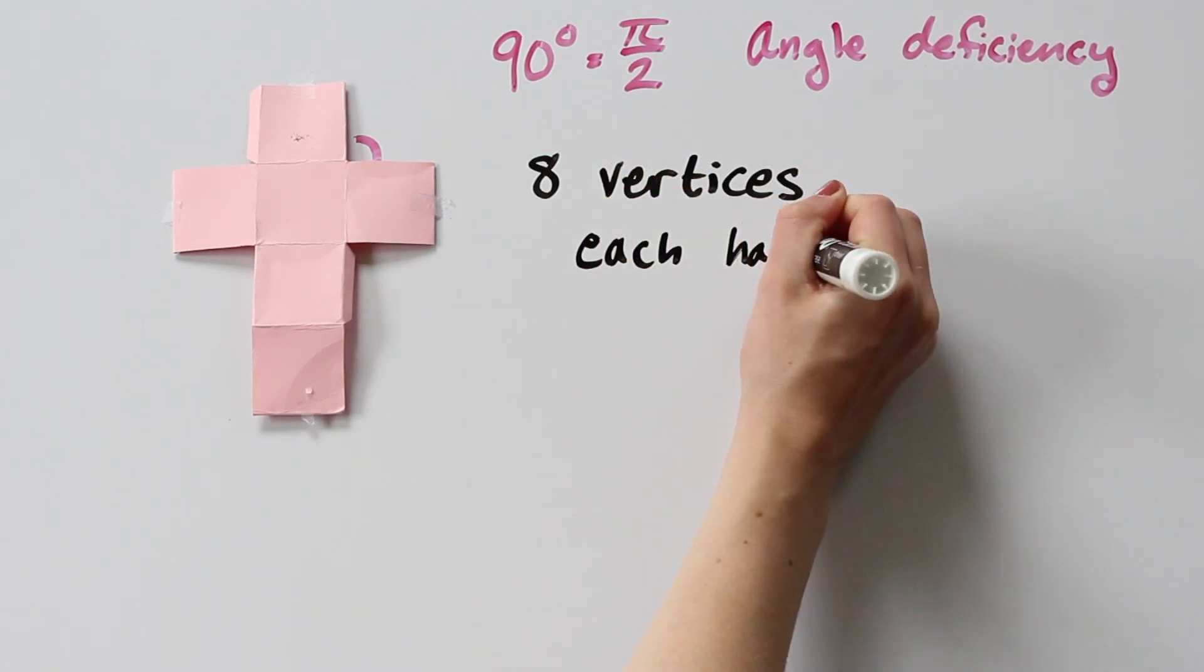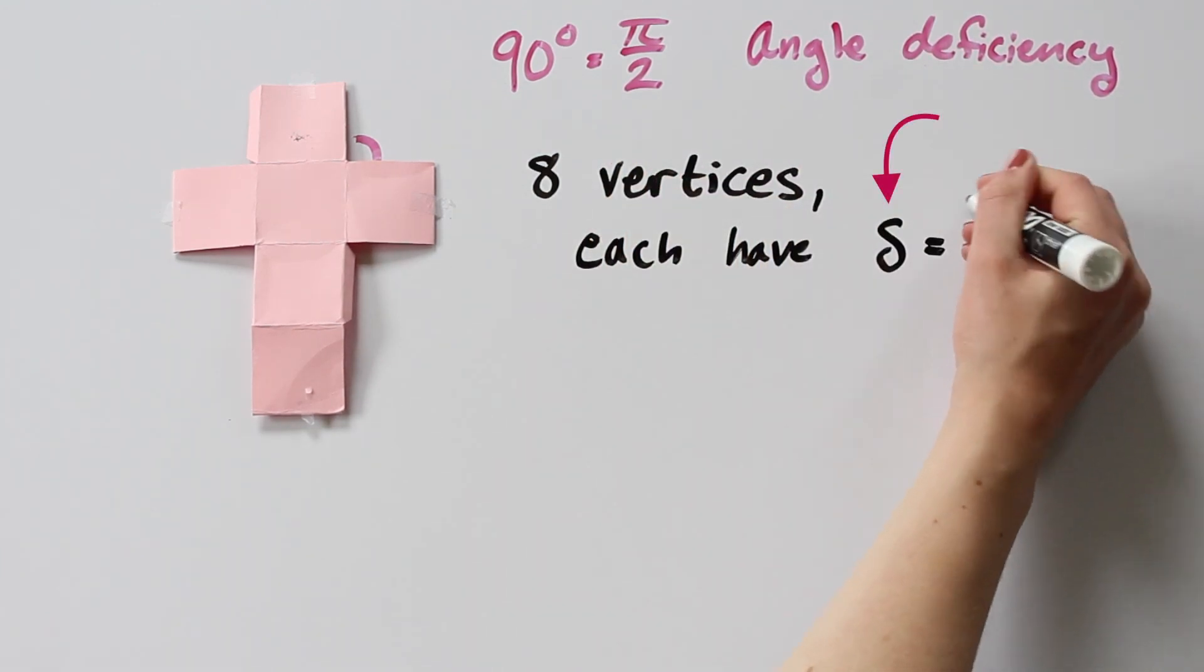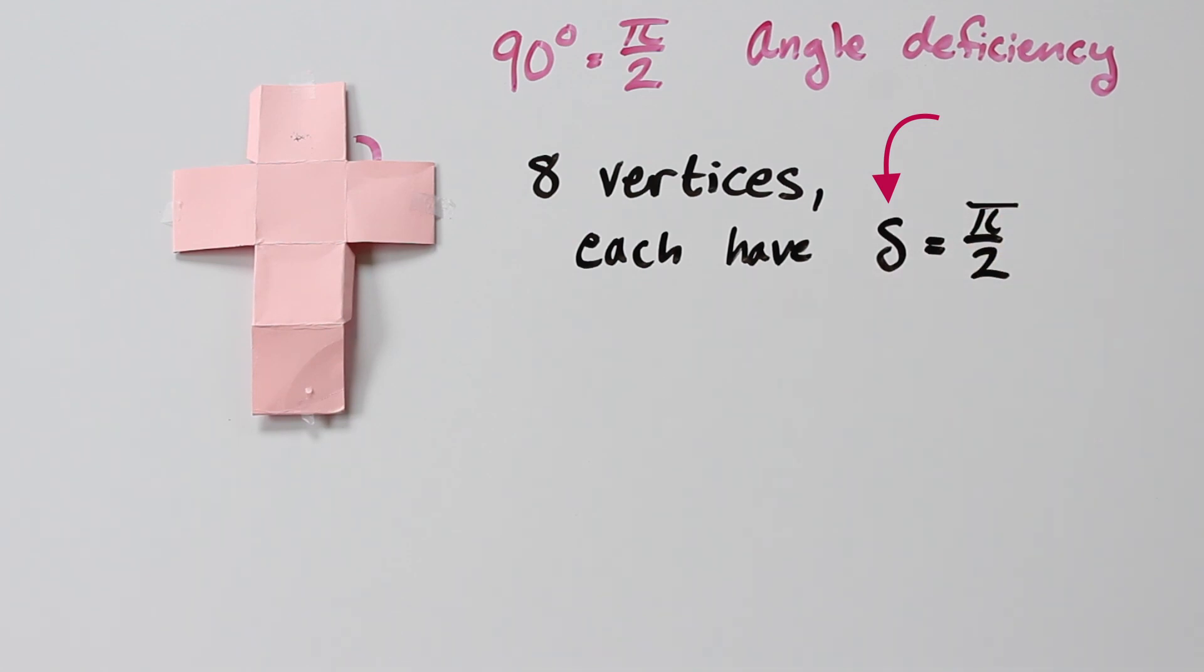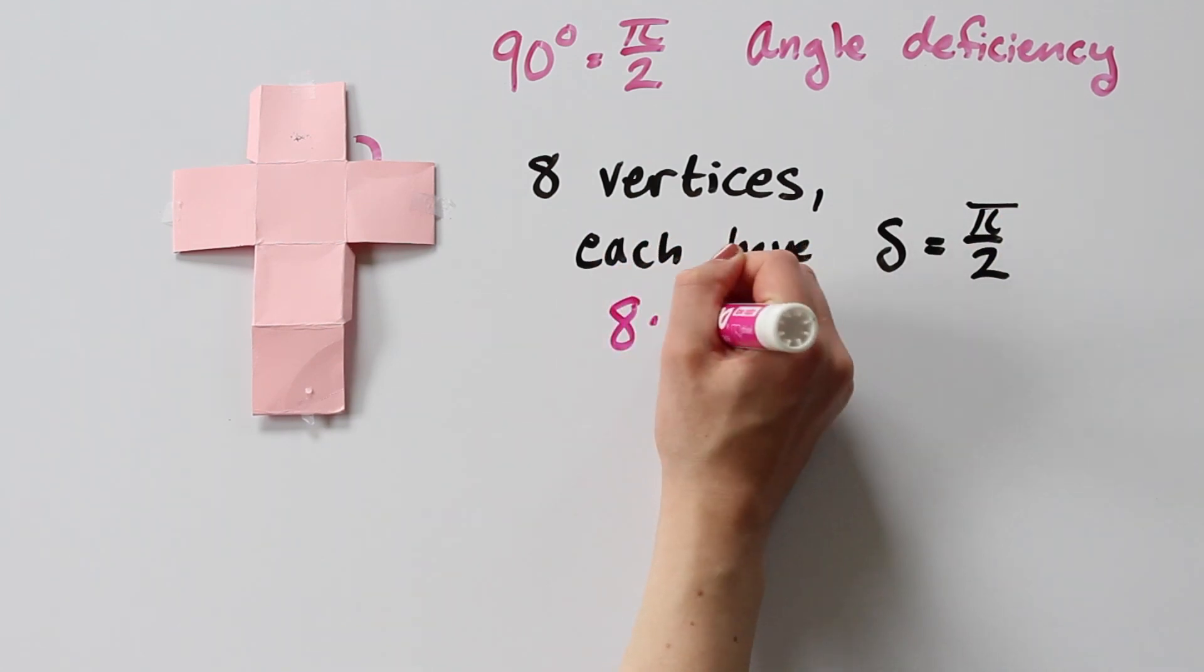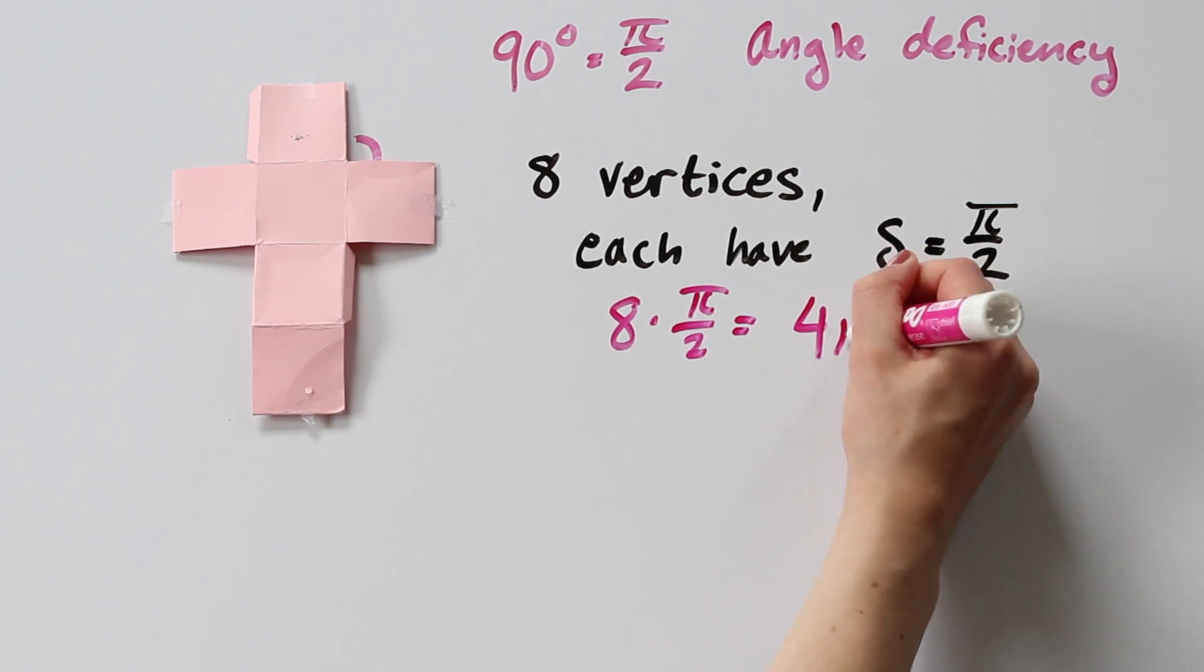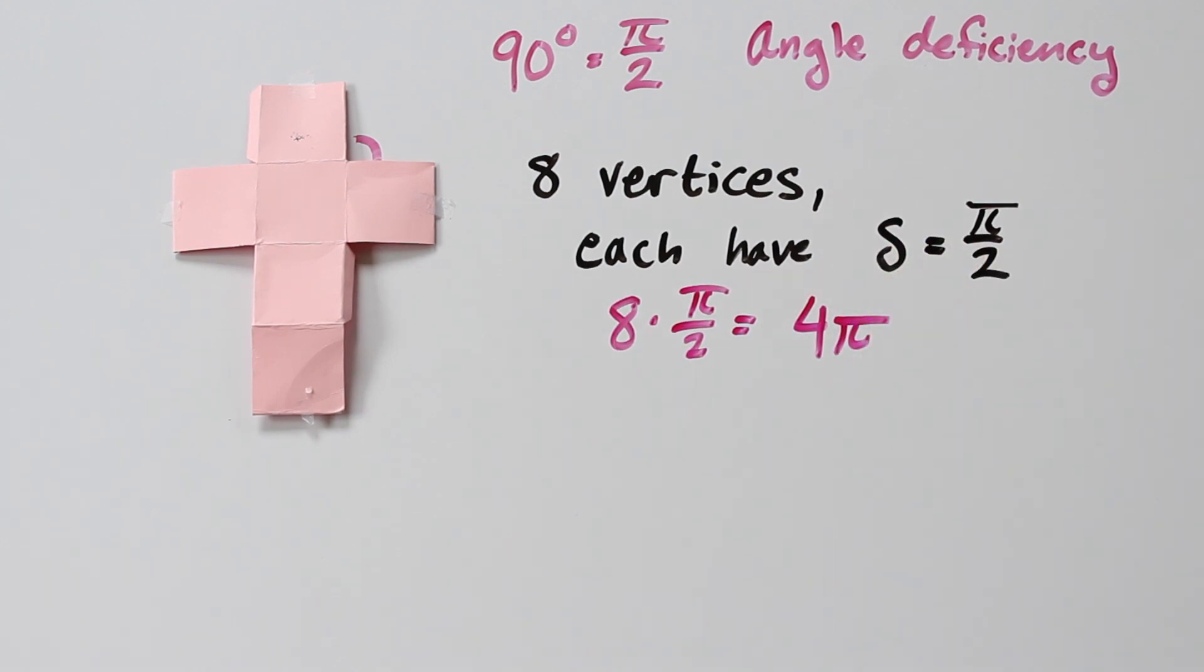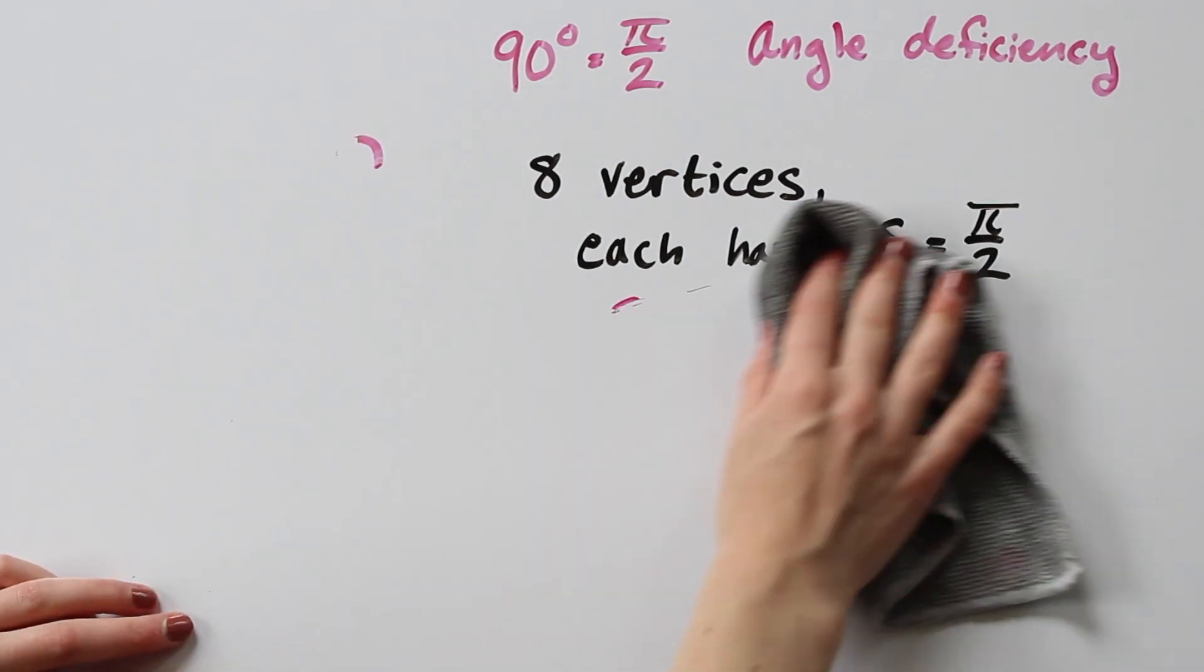We use the Greek letter delta to denote angle deficiency. That's 8 times pi over 2 equals 4 pi total angle deficiency over the whole shape. Let's hold on to that and we'll look at the tetrahedron.